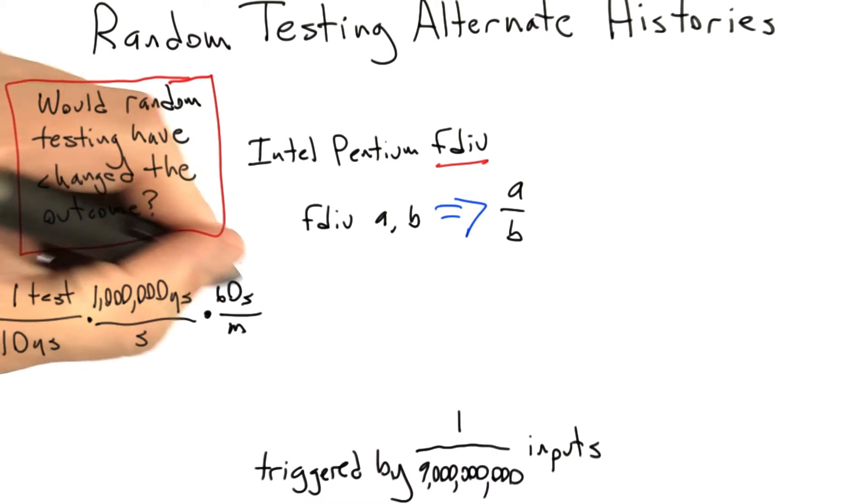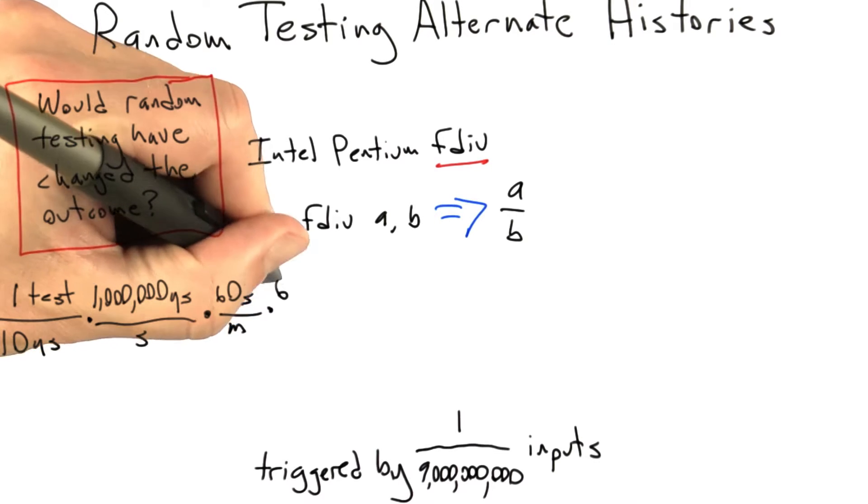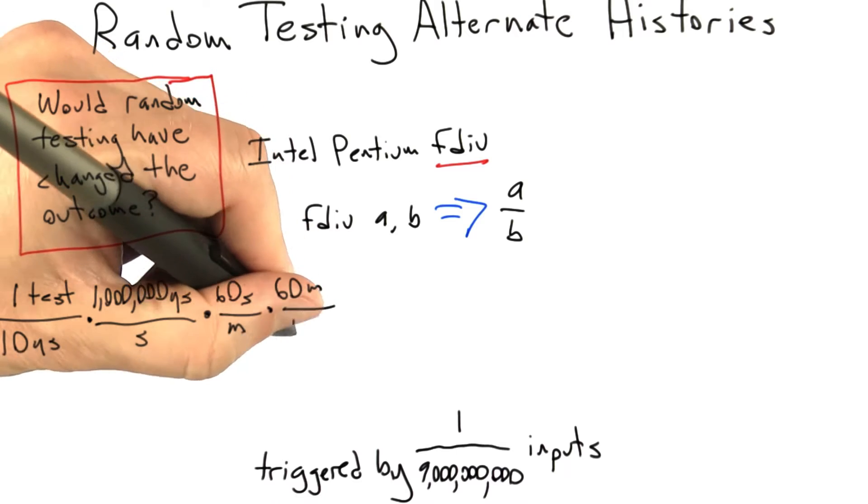All right, let's try to work out the math. So what we have is, by assumption, we can run one test every 10 microseconds.